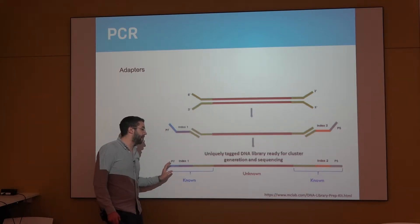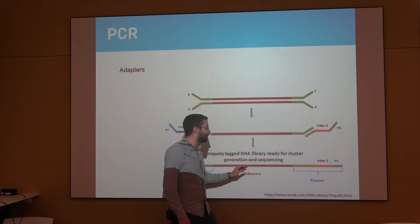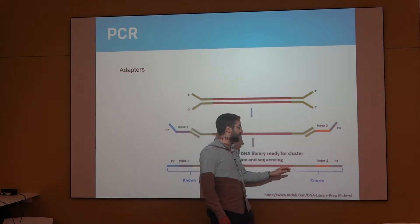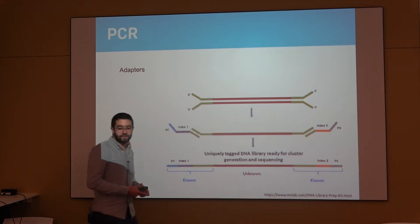But in general the idea is here. You have at the beginning of your sequence some known fragment, then the unknown part that you want to sequence, that you want to learn from the DNA of your cells, and then at the end you have another known fragment of DNA.